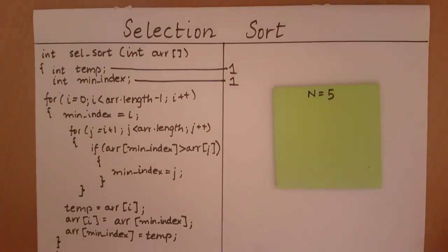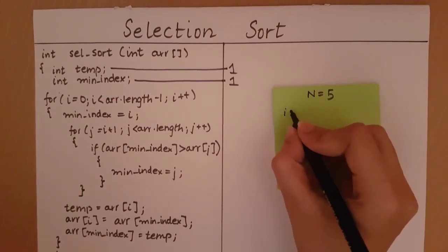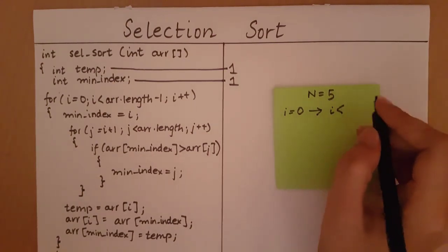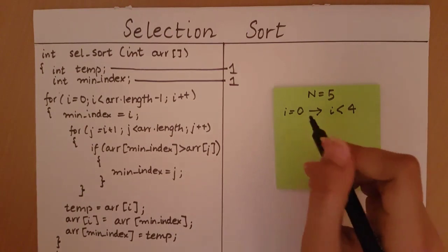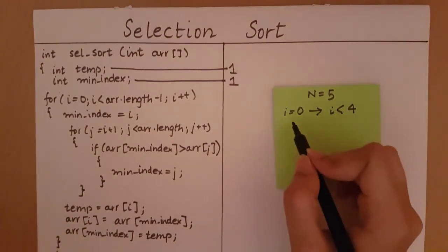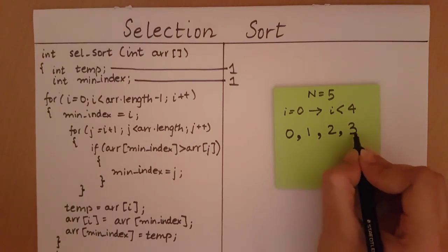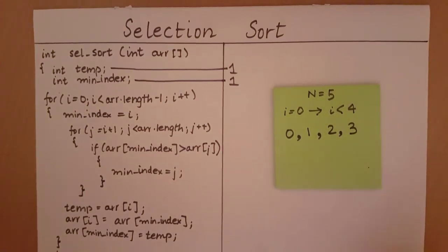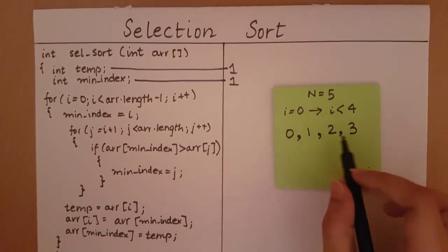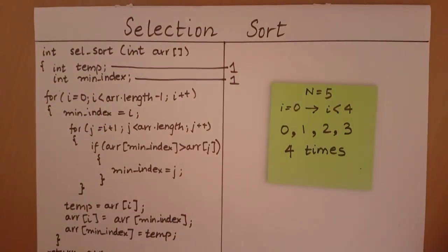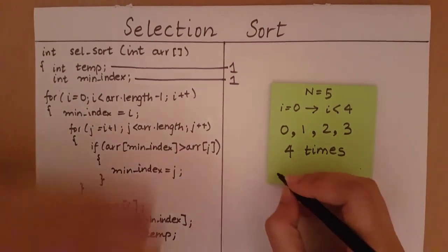Assuming n is equal to 5, i starts at 0 and goes all the way till i is less than array.length minus 1, which is 5 minus 1 equals 4. So i goes from 0 to 3 — it will not reach 4 because it's strictly less than 4. The loop executes 4 times. So when n is 5, the loop executes 4 times, meaning for any array of size n, the i loop is going to execute n minus 1 times.